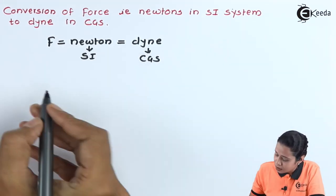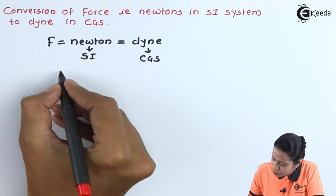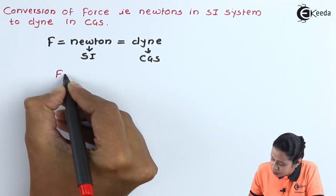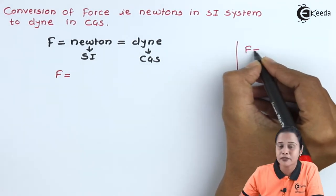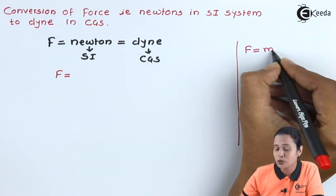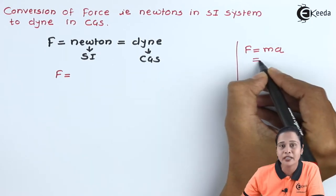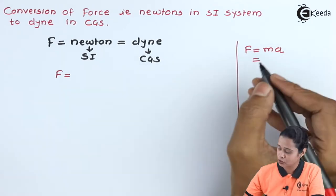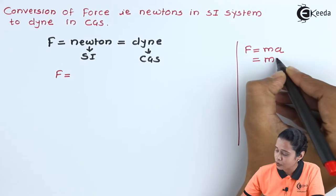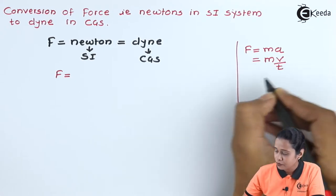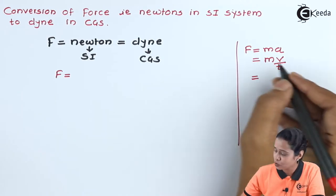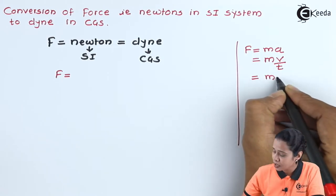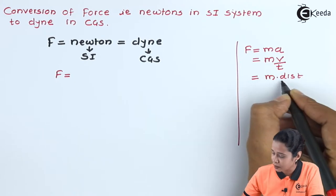Let us find out its relation. Here we have force which is equal to mass into acceleration. We can write acceleration in terms of velocity, so mass into velocity per unit time. We can express velocity in terms of distance per unit time, so we will write down here mass into distance upon time.